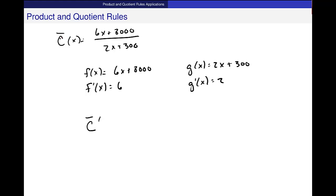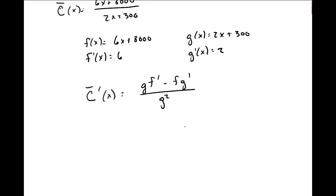And now, c prime, the average cost, or the derivative of the average cost, is given by this gf prime minus fg prime over g squared. So I'll go ahead and plug in these pieces that I have.